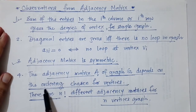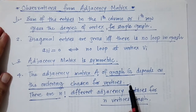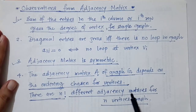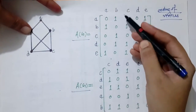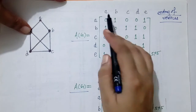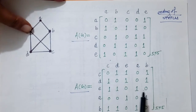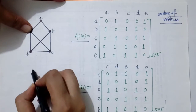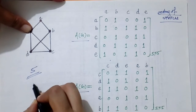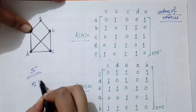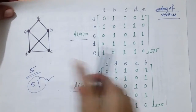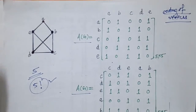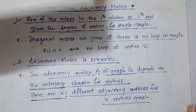The fourth observation: the adjacency matrix for a graph G depends on the ordering of the vertices, and there are n-factorial different adjacency matrices possible for a graph with n vertices. In the last example we saw two different adjacency matrices by changing the ordering of vertices. Since there are five vertices, there are 5! = 120 different adjacency matrices possible for that graph.